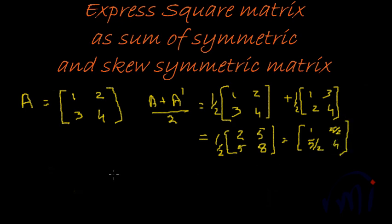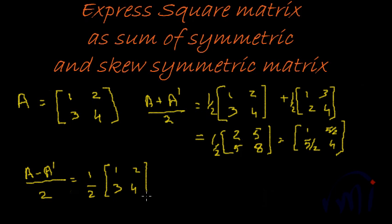Similarly, the skew symmetric part would be A minus A dash by 2 which is equal to 1 by 2, 1, 2, 3 and 4, 1, 2, 3 and 4, equal to half of 0, 0, this would be minus 1 and this would be 1.